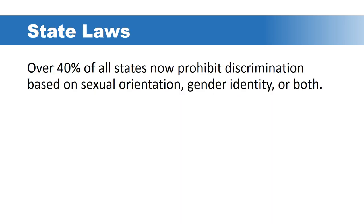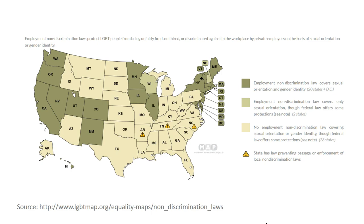It's always important to understand where a claim may be occurring. At the state level, over 40% of all states now prohibit discrimination based on sexual orientation, gender identity, or both — and this is an ongoing development. Employers must be mindful of how they can be held liable. A map shows the states that currently have non-discrimination laws covering sexual orientation and gender identity, or just sexual orientation. Washington state has an employment non-discrimination law that covers both. The jurisdiction itself will have some say as to the legitimacy of claims.